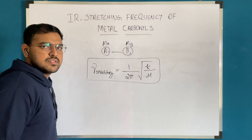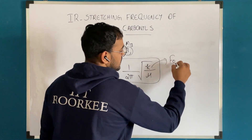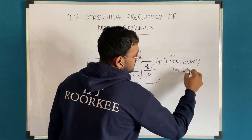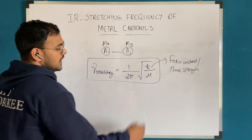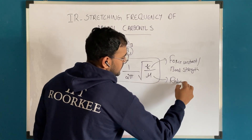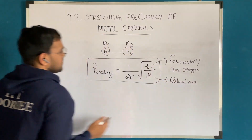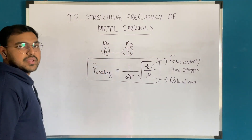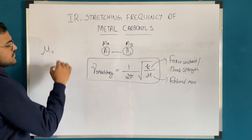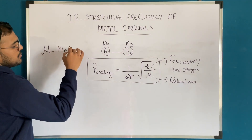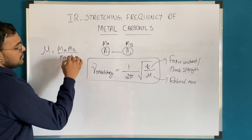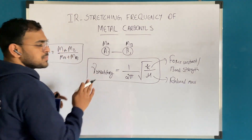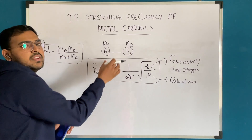What are these terms? Here k is the force constant, or you can say the bond strength parameter. μ is the reduced mass. We have A and B atoms connected with a bond having molar masses M_A and M_B. So we can write the reduced mass μ as M_A × M_B divided by M_A + M_B. This is called reduced mass. Using this expression we can find out the stretching frequency of this bond between A and B.